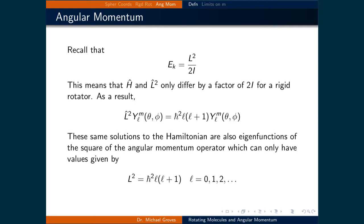This means that the Hamiltonian and the total angular momentum squared differ by a factor of 2 times I. As a result, L-hat squared times the wave function of the rigid rotator is equal to h-bar squared times L(L+1) times Y, the wave function of the rigid rotator. These same solutions to the Hamiltonian are also eigenfunctions of the square of the angular momentum operator, which can only have values given by h-bar squared L(L+1), where L equals 0, 1, 2, and any other positive integer. These values of L are defined by the solution to the Schrödinger equation used to solve the rigid rotator problem.